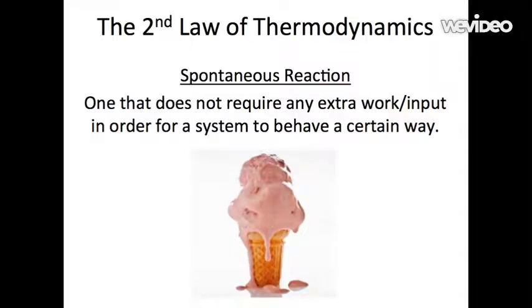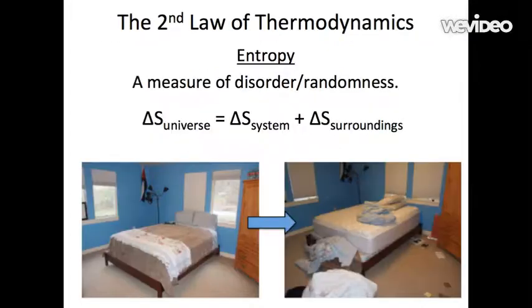Now let's talk about the second law of thermodynamics. The second law of thermodynamics has to do with spontaneous reactions and entropy. A spontaneous reaction is one that does not require any extra work or input in order for a system to behave a certain way. For example, ice cream will melt on a hot day if we leave it in the sun. We don't have to do anything to cause this process to occur. A simple way to think of entropy is as a measure of disorder, or randomness. The second law states that for any spontaneous process, the entropy of the universe increases.